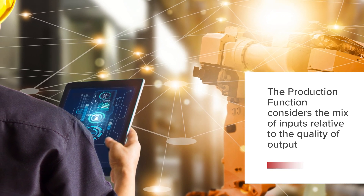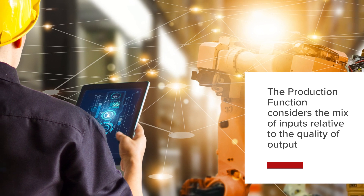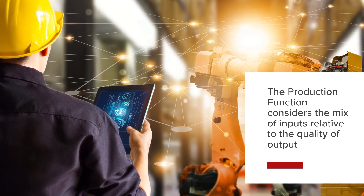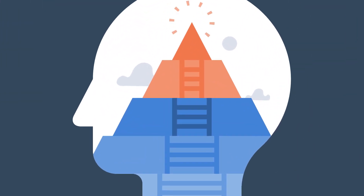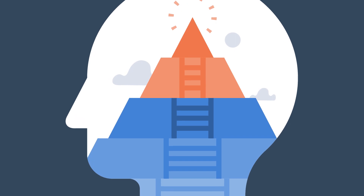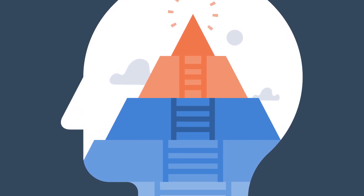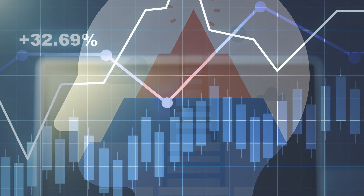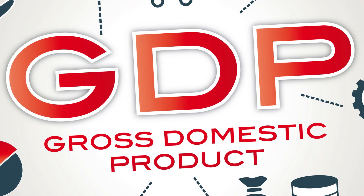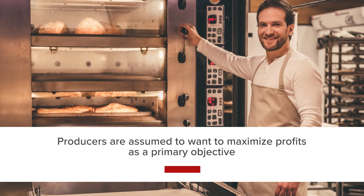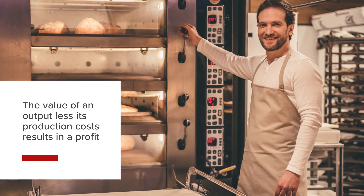The production function considers the mix of inputs relative to the quality of output. How an economy fares as a result of production processes can be measured by economic well-being. Everything is produced to satisfy consumers' needs or wants, and how that is achieved determines whether the economy is behaving optimally. Increasing productivity or growing the quality of output over time should increase as gross domestic product rises. Producers are assumed to want to maximise profits as a primary objective — the value of an output less its production costs results in a profit.